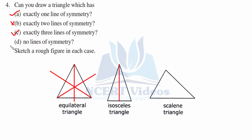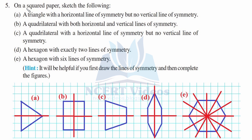A scalene triangle is one which does not have any sides equal. Question five: on squared paper, sketch the following. Part A: a triangle with a horizontal line of symmetry but no vertical line — we construct a triangle where flipping horizontally gives the same triangle. Part B: a quadrilateral with both horizontal and vertical lines of symmetry — this is a rectangle, which has both.